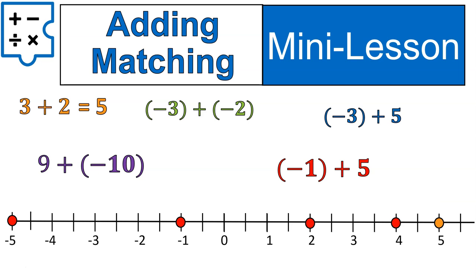Let's do another one. Negative 3 plus negative 2 — that means we're starting at negative 3 and we're adding a negative 2 onto it, or going two more in the negative direction. Negative 3 plus negative 2 would bring us down to negative 5.